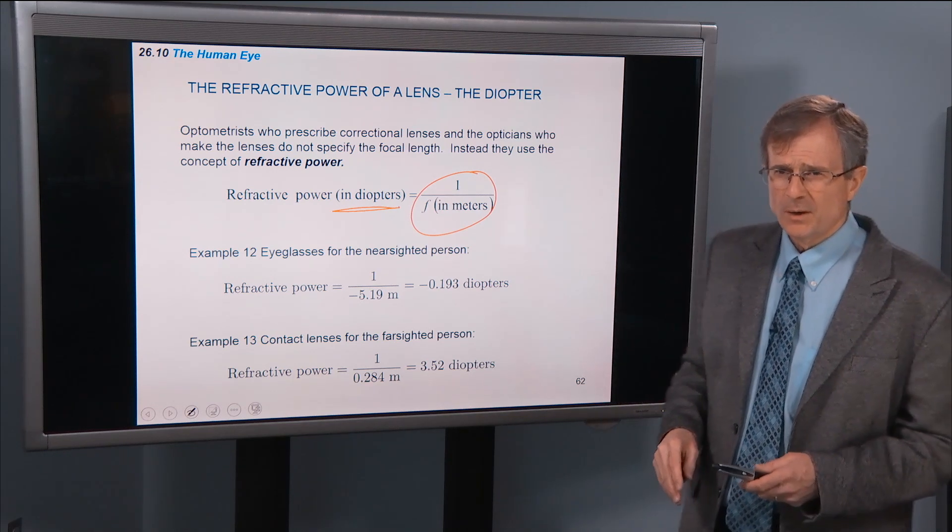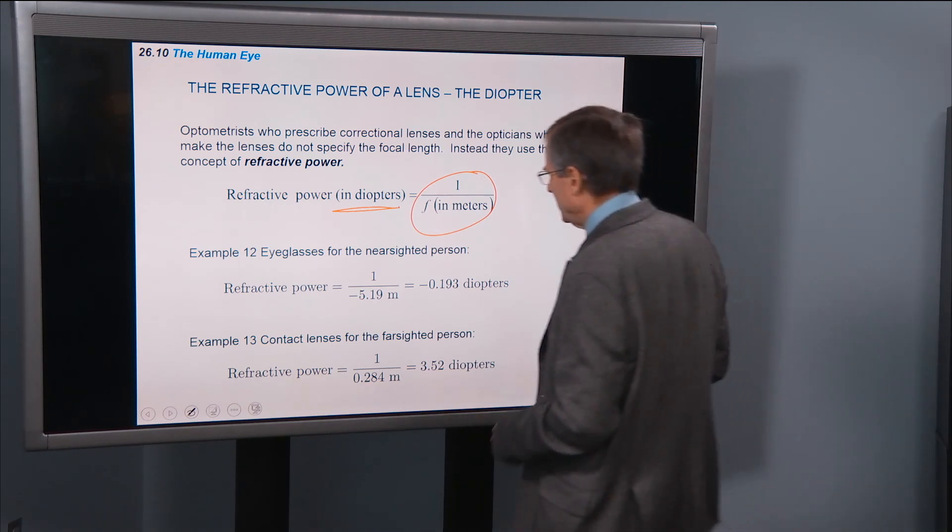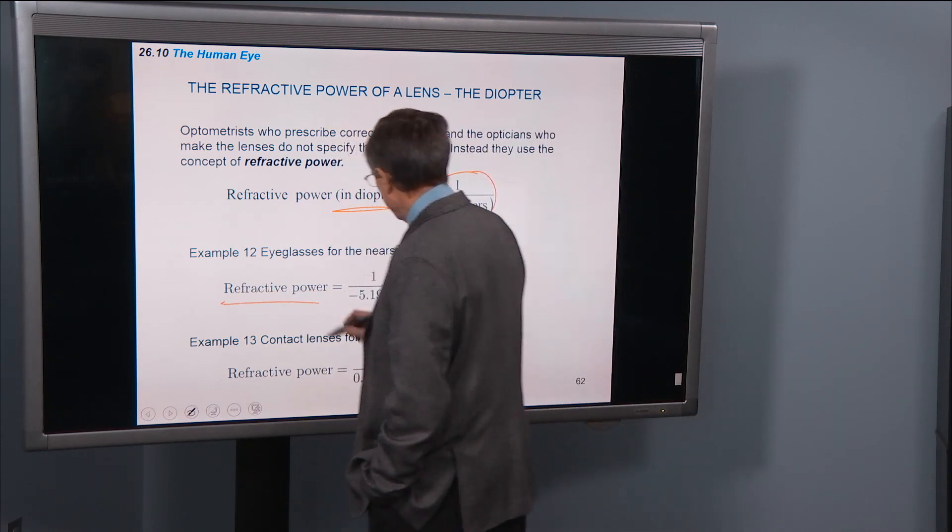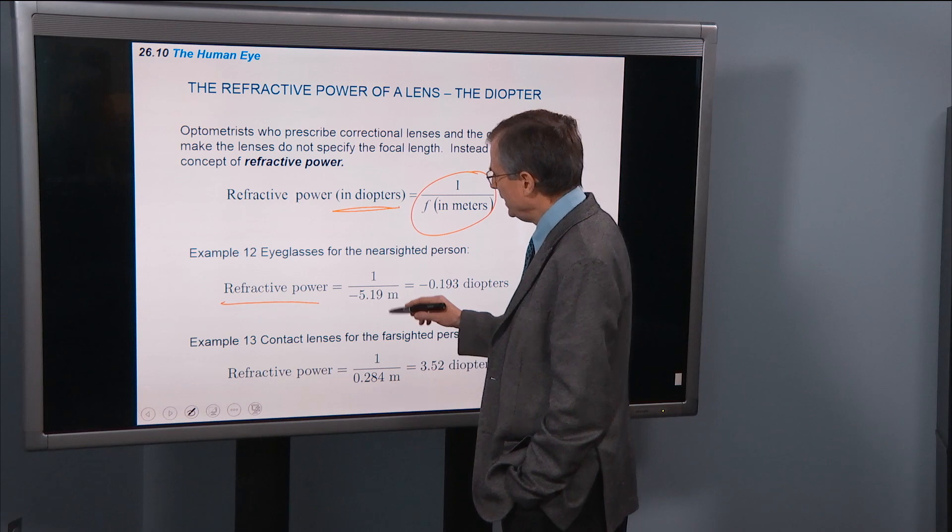So refractive power, nearsighted person, this refractive power in diopters, you're going to need a, what kind of lens